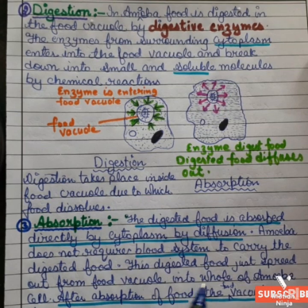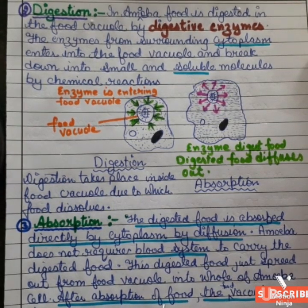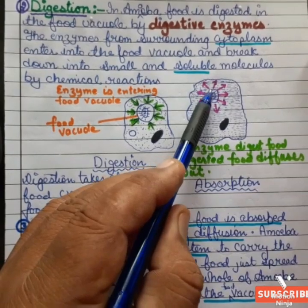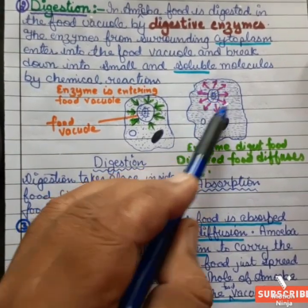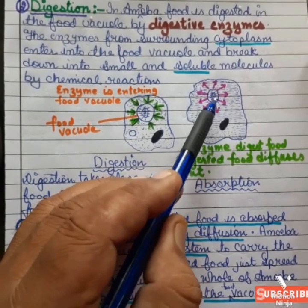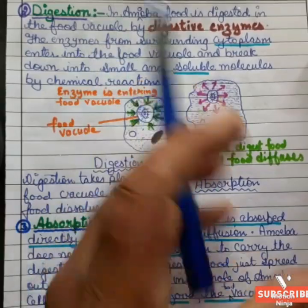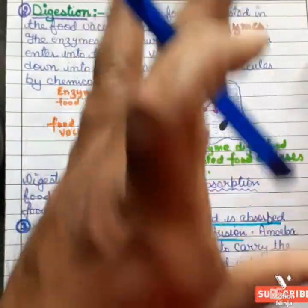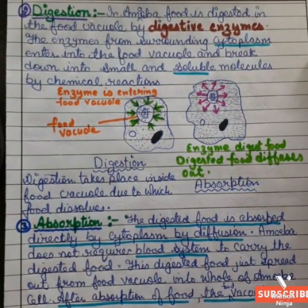The digested food simply spreads out from the food vacuole into the whole amoeba cell. After absorption, the food vacuole disappears. The digested food diffuses out of the food vacuole and is absorbed into the cytoplasm of the amoeba.